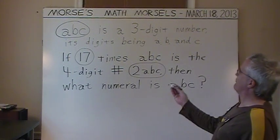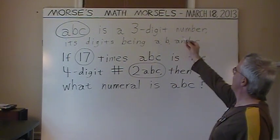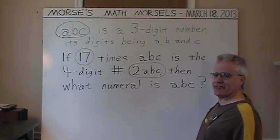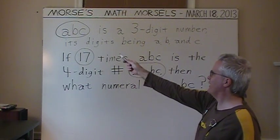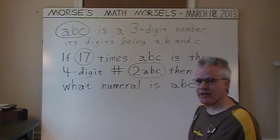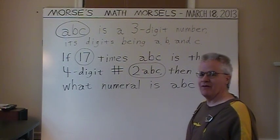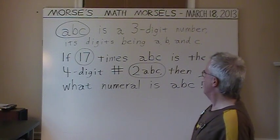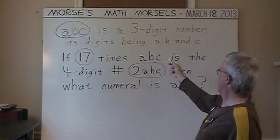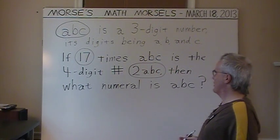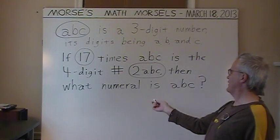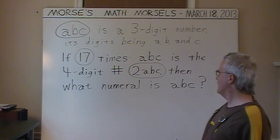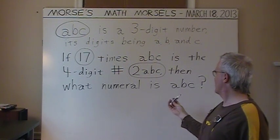Let ABC be a three-digit number, its digits being A, B, and C. Hence, ABC does not mean A times B times C, but are the actual digits of a three-digit number. If 17 times ABC is the four-digit number 2ABC — so that's 2,000 plus the digits ABC — then what numeral is ABC?